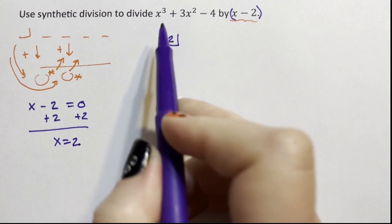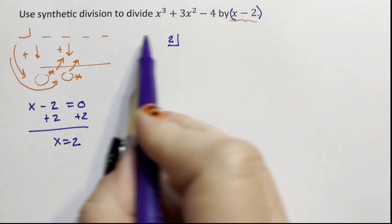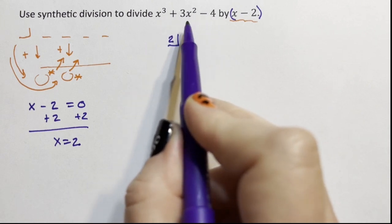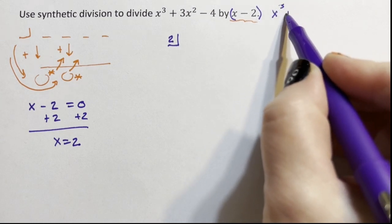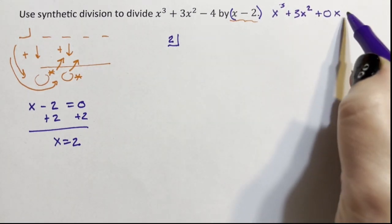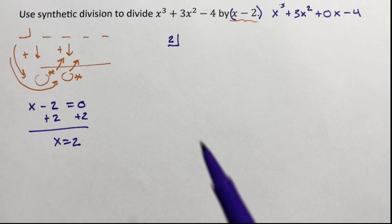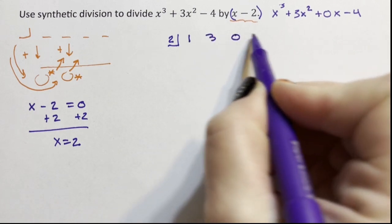And now we put our coefficients. Coefficient is the word for number multiplied to a variable and our constant, but we have to acknowledge every coefficient straight down the line. So we have x cubed and we have 3x squared, but we don't have an x term. So there are no x terms, and then we have a minus 4. We have to acknowledge the missing x, otherwise none of this works. That happens in long division as well. You always have to acknowledge what is missing. So we have an x cubed, a 3x squared, no x's, and a negative 4.